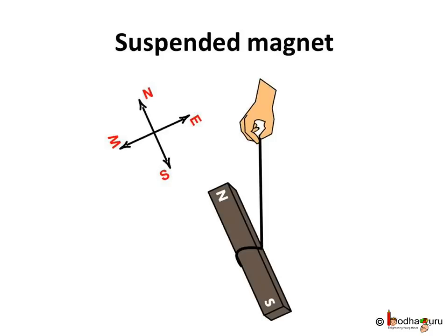If you suspend a magnet from a string, one end of the magnet will tell you which is the North direction — that end is the North Pole of the magnet. The other end will show you the South, and that end is the South Pole of the magnet.